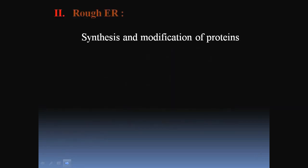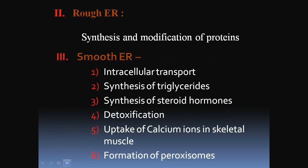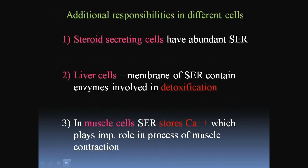The rough endoplasmic reticulum is useful in synthesis and modification of proteins. The smooth endoplasmic reticulum's functions are mainly intracellular transport, synthesis of triglycerides, synthesis of steroid hormones, detoxification, uptake of calcium ions in skeletal muscle, and formation of peroxisomes. There are also additional responsibilities in different cells like steroid-secreting cells, liver cells, and muscle cells.